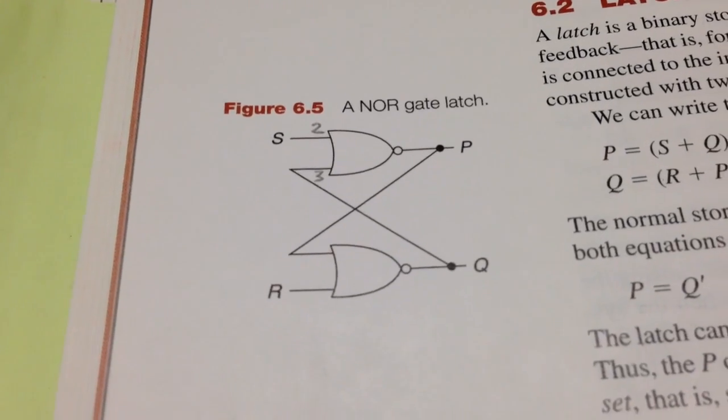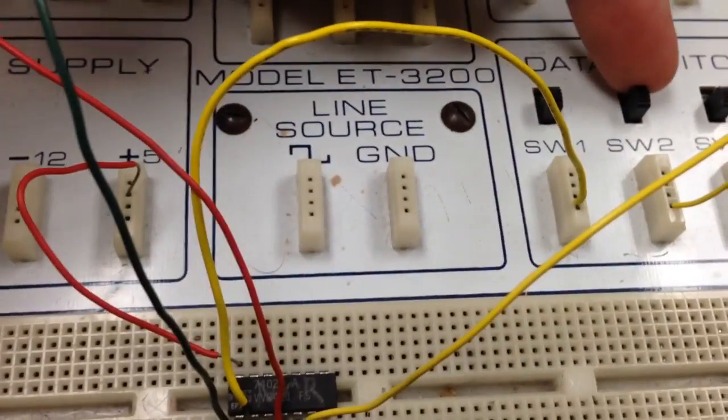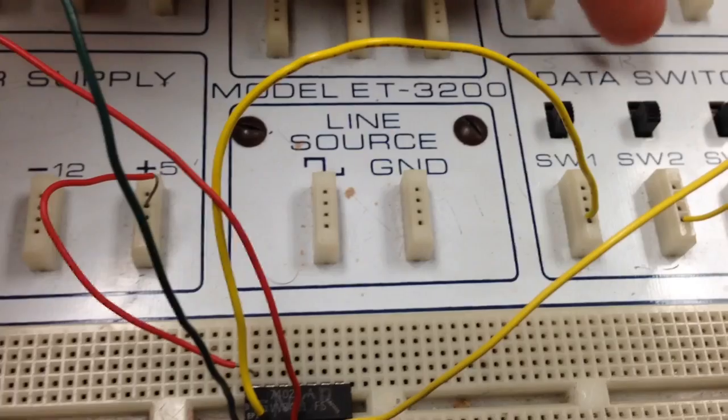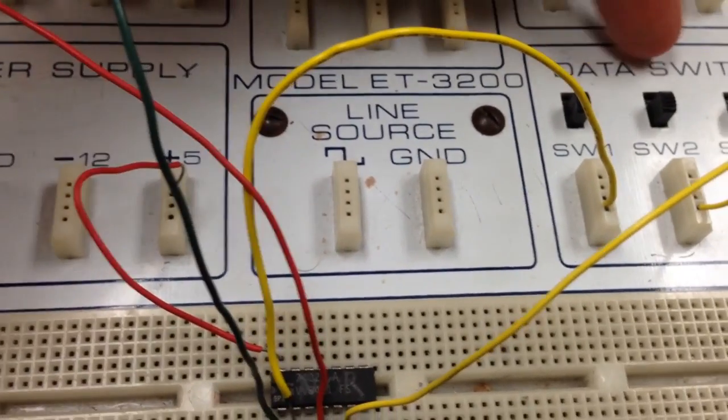This is an RS flip-flop with two NOR gates, 7432. When you put those into the breadboard, you can use two switches right here, switch 1 and switch 2, for S and R. So this is set and reset.